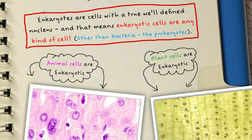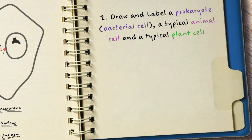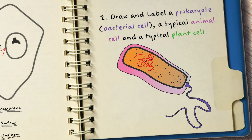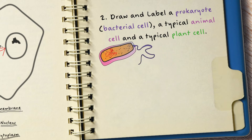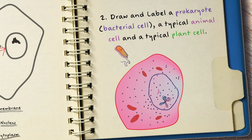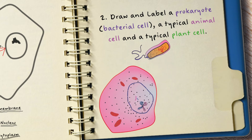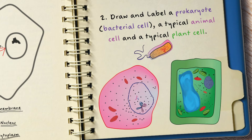So eukaryotes are cells with a true, well-defined nucleus, and that means eukaryotic cells are any kind of cell other than bacteria — the prokaryotes. The cells you need to be able to draw, recognize and label are: number one, a generalized structure of a prokaryote, a bacterial cell; number two, the generalized structure of an animal cell; and number three, the generalized structure of a plant cell.